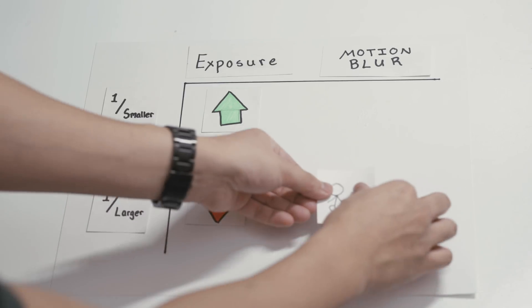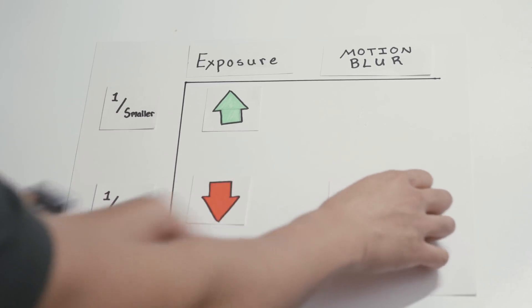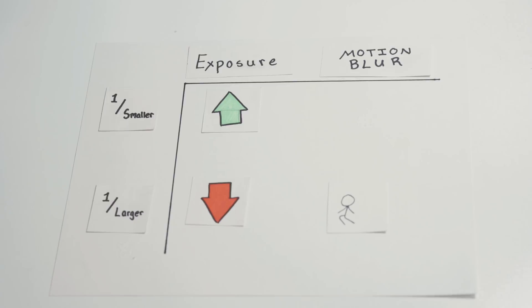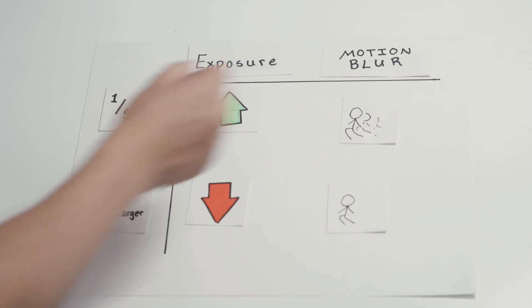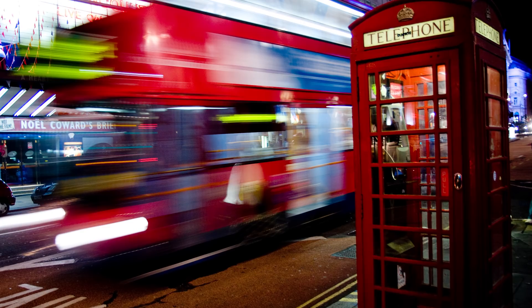Shutter speed also controls how much motion blur is in the image. If you want to freeze a subject in motion, you would shoot at something like one four-thousandth of a second, and someone jumping would be frozen in time. If you wanted to capture something with more motion blur, you would slow down the shutter speed to something like one twenty-fifth of a second.